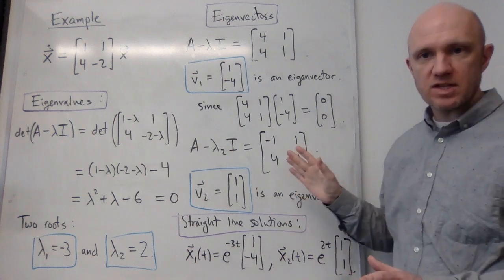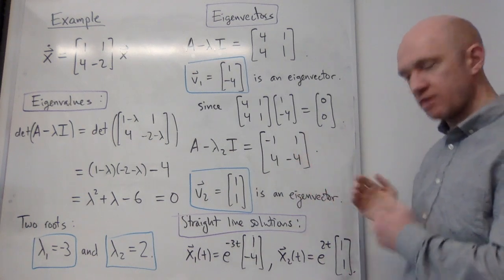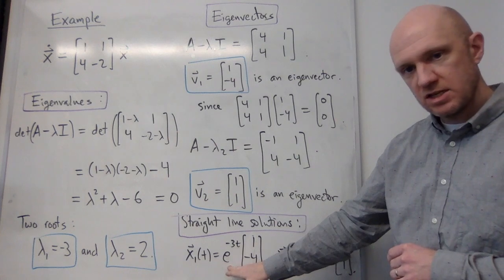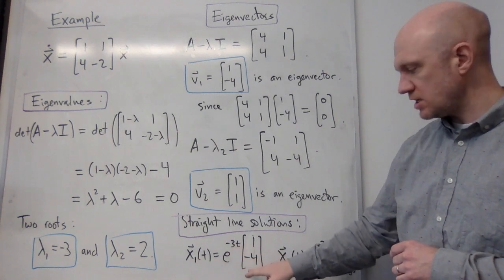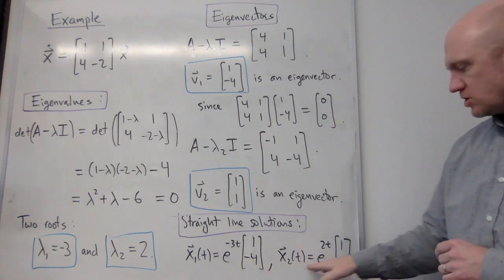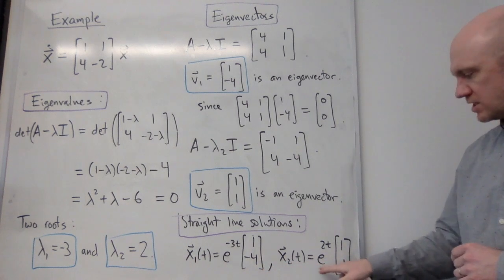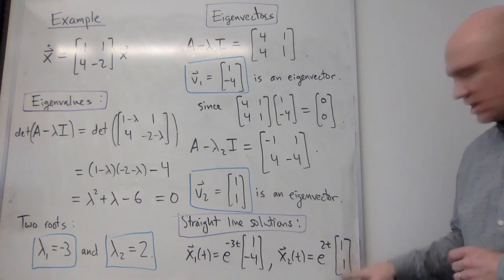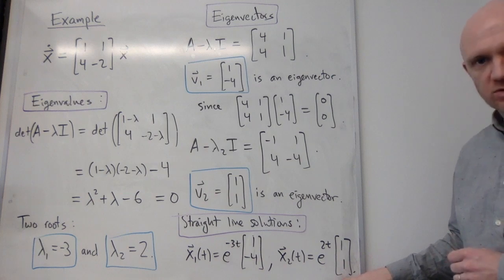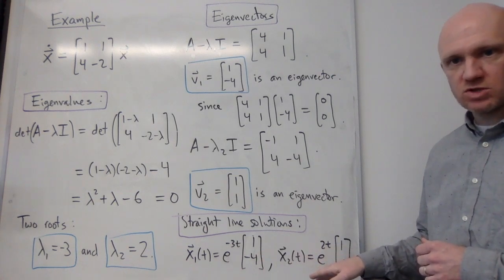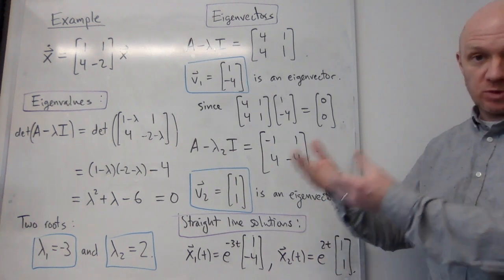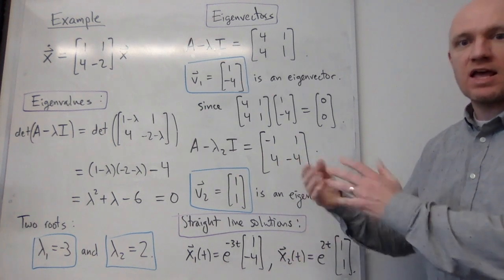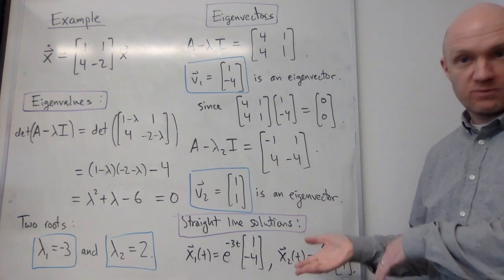Now I've got all the ingredients I need to find the straight line solutions. I just plug everything in. x1 is e to the minus 3t times 1, minus 4. That's e to the lambda 1t times v1. And x2 is e to the 2t times 1, 1. That's e to the lambda 2t times v2. That's it. I've got two straight line solutions. I now have got basically everything I need to both produce explicit solutions to the equation and to draw the phase plane.